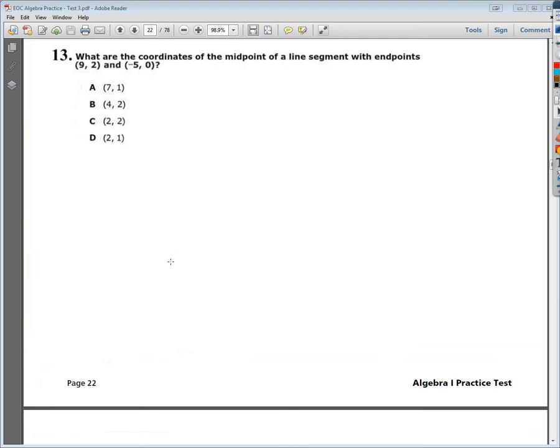Welcome, this is the Tennessee End of Course Algebra 1 Practice Test number 3, question number 13. The question says, what are the coordinates of the midpoint of a line segment with endpoints (9, 2) and (-5, 0)?